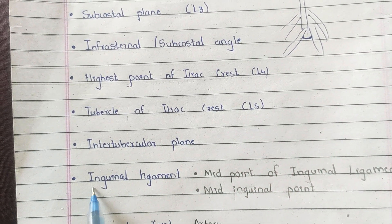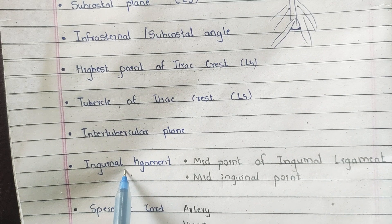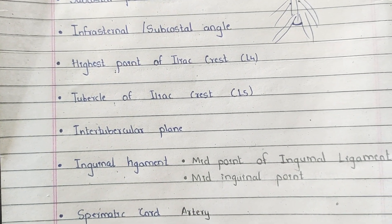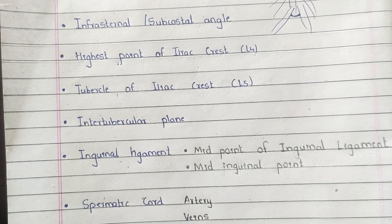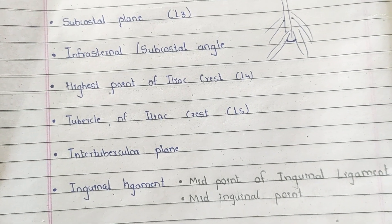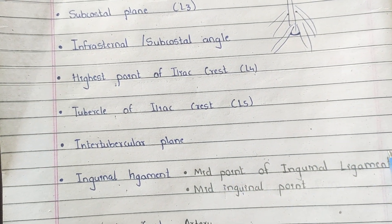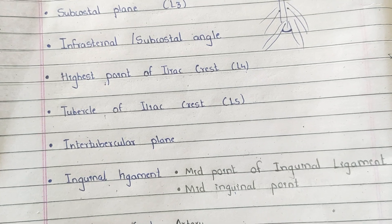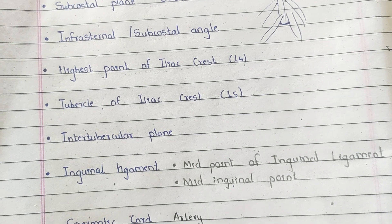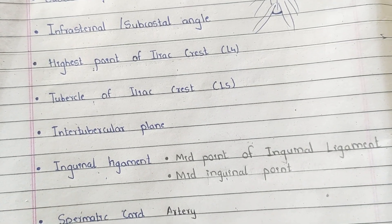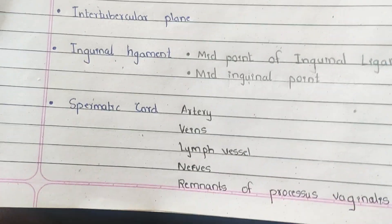The inguinal ligament is the ligament formed by the aponeurosis of external oblique abdominis, which lies between the anterior superior iliac spine and the pubic tubercle. The midpoint of the inguinal ligament is the midpoint between the anterior superior iliac spine and the pubic tubercle, whereas the mid-inguinal point is the midpoint between the anterior superior iliac spine and the pubic symphysis.